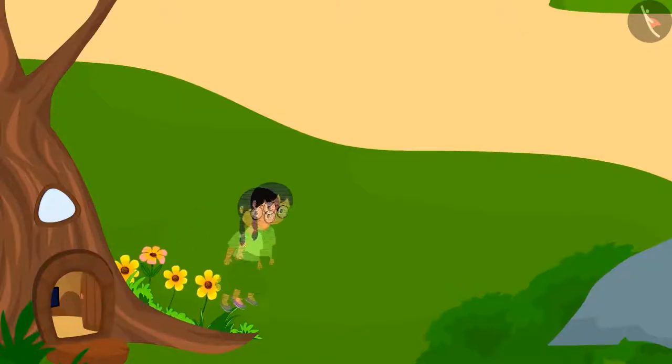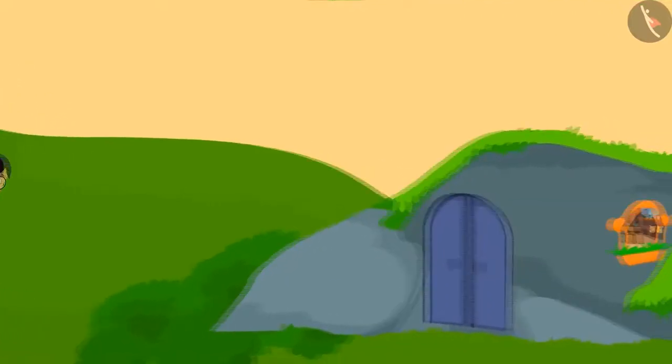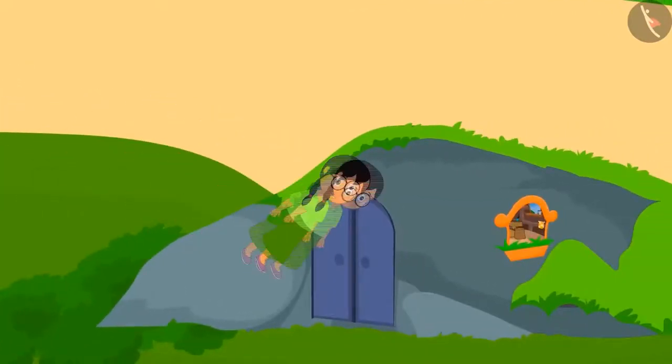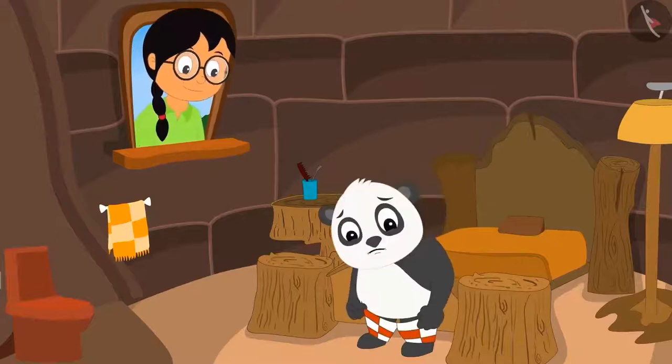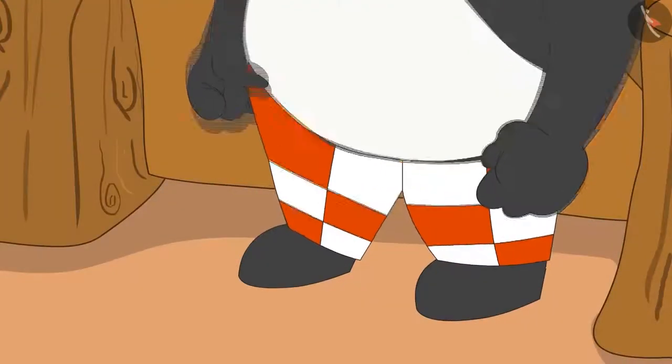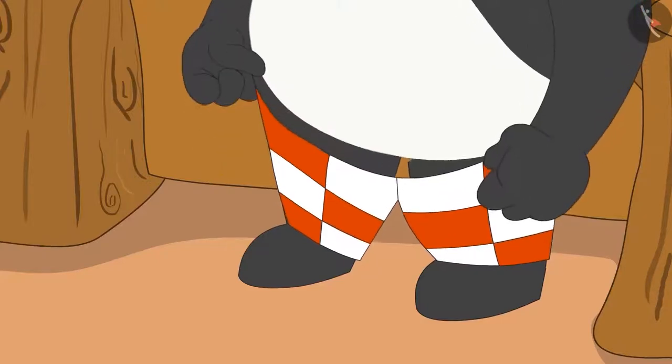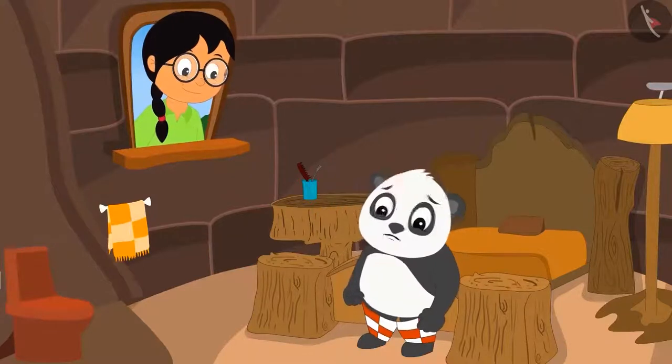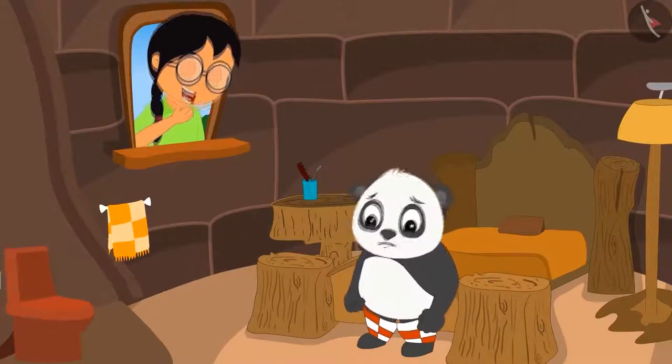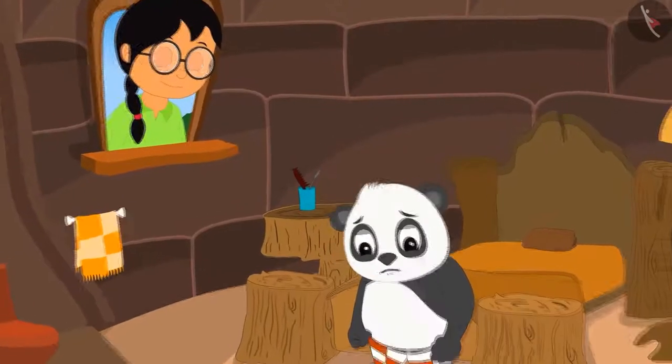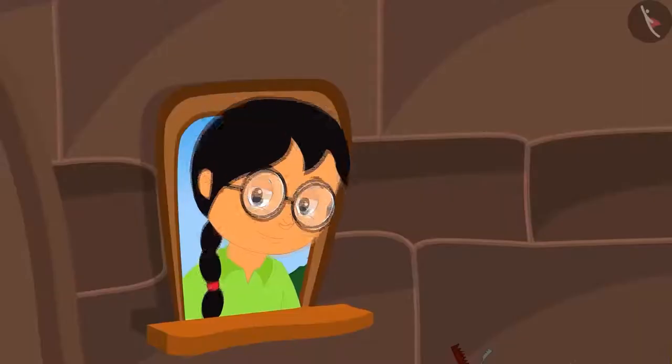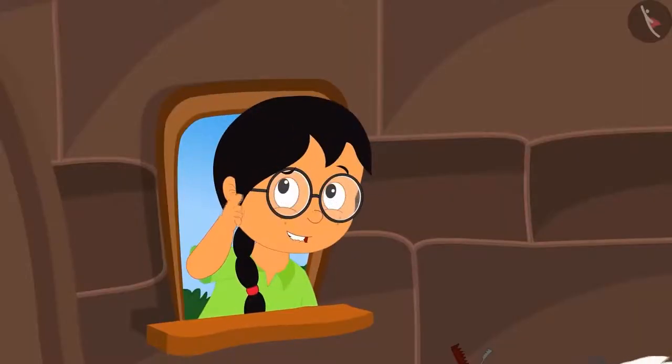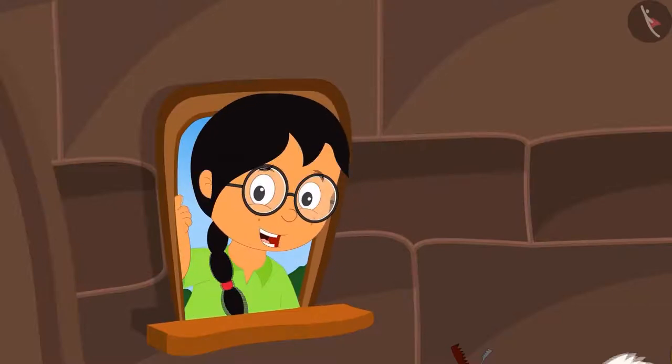After this, Minoo wanted to see what Golu Panda is doing. She flies off to his house and sees that he is struggling to wear trousers. There is such a pattern on his trousers. Minoo laughs upon seeing Golu. It is good that he cannot see her. Minoo thinks how can she make this pattern using the dot grid.